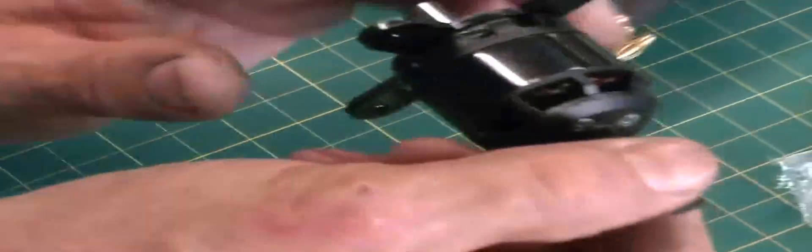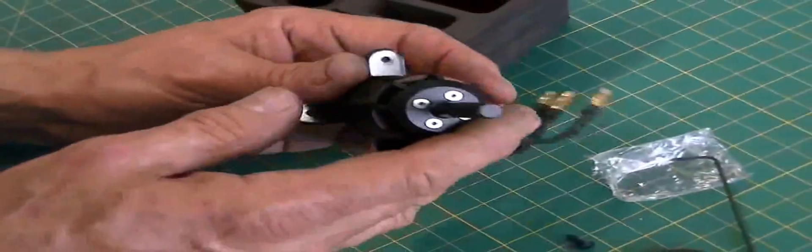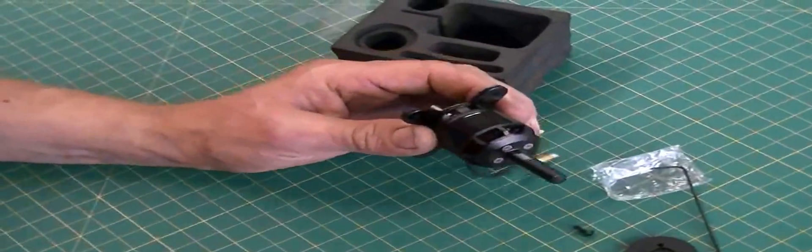Okay, that's it. Now you've got the prop adapter on there. You've got an X mount on the back which you can mount to a plywood firewall.